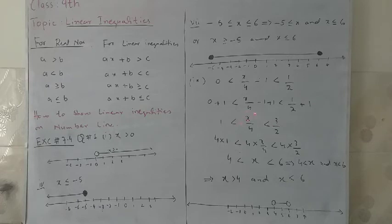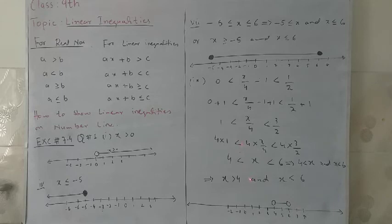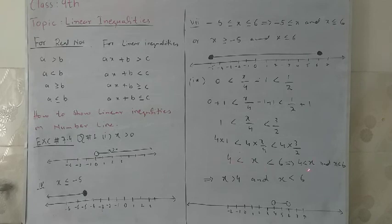To obtain the value of x in the center, we will multiply by 4 on all sides. 4 times 1 less than 4 times x by 4 less than 4 times 3 by 2. We get 4 is less than x — the 4 and 4 cancel out — and x is less than 6, since 2 twos are 4 and 3 times 2 are 6. So we write 4 is less than x, or equivalently x is greater than 4, and x is less than 6.